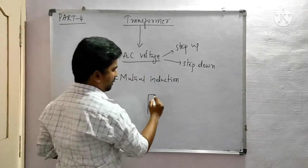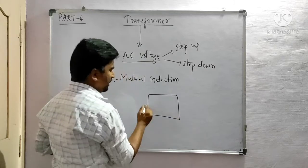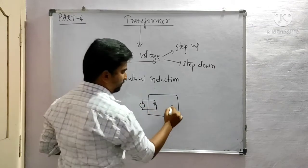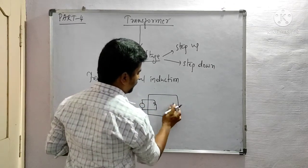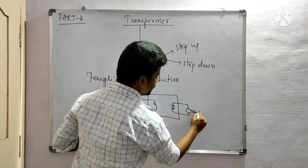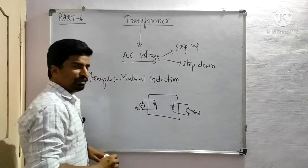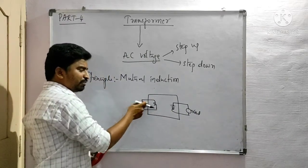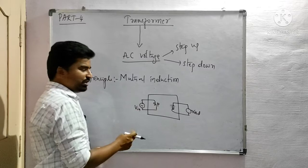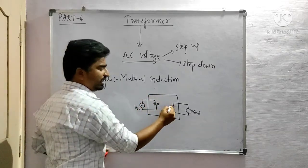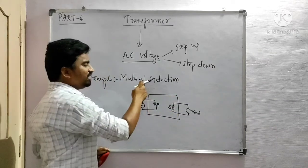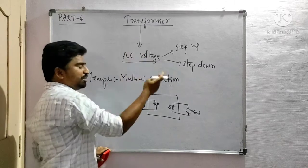The transformer consists of a rectangular coil in which a soft iron core is wound. The input is connected to the primary coil and the output is measured at the secondary coil. When alternating current is passed through the primary coil, the magnetic field inside it changes, so the magnetic field linked with the secondary coil also changes, inducing an EMF in the secondary coil. This is mutual induction, and the transformer is based on this property.